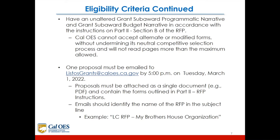Applicants must have an unaltered grant subaward programmatic narrative and a grant subaward budget narrative in accordance with the instructions in Part 2, Section B of the RFP. Cal OES cannot accept alternate or modified forms without undermining its neutral competitive selection process, and will not read pages beyond the maximum allowed. One proposal must be emailed to listosgrants@caloes.ca.gov by 5 p.m. on Tuesday, March 1, 2022. Proposals must be attached as a single document such as a PDF and contain the forms outlined in Part 2 of the RFP. Emails should identify the name of the RFP in the subject line — for example: LC RFP, [Organization Name].